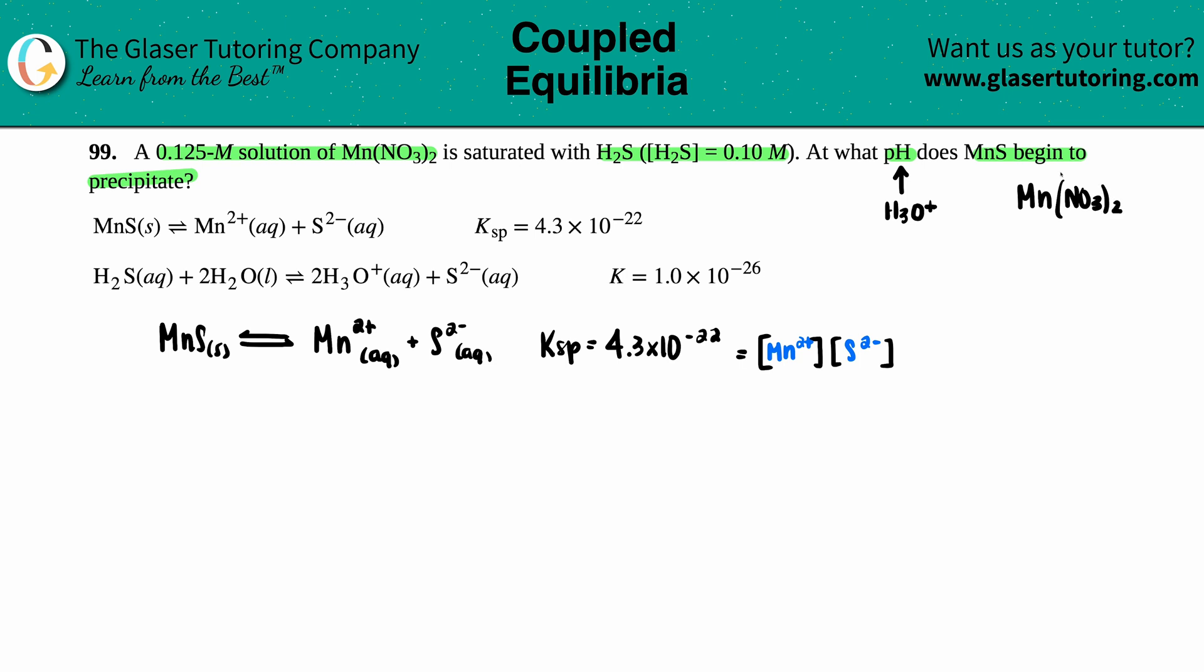So if I have Mn(NO₃)₂, remember that all nitrate compounds are aqueous, they're soluble, no exceptions. So that means that this is going to break down into its two ions. And the two ions are Mn²⁺ and 2NO₃⁻.